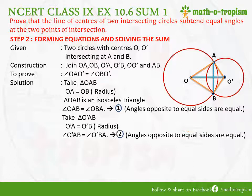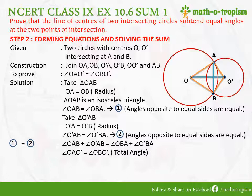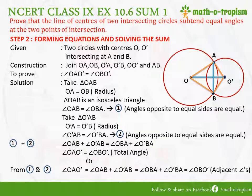Similarly in triangle O'AB, we get angle O'AB equals angle O'BA. — (Equation 2). Adding equations 1 and 2: angle OAB plus angle O'AB equals angle OBA plus angle O'BA, which gives total angle OAO' equals total angle OBO'. Thus we have proven it. Alternatively, starting from angle OAO' as the sum of angle OAB plus angle BAO', which equals angle OBA plus angle ABO', forming the total angle OBO'. Either way, we have proven the result.